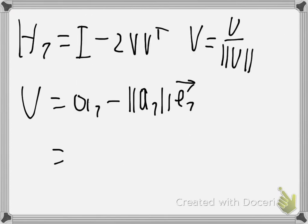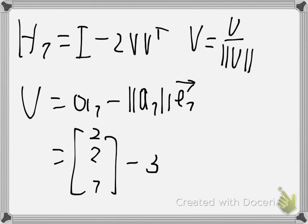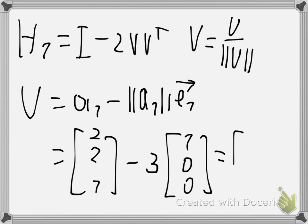So this will be the vector (2, 2, 1) minus the length of a1, which is the square root of 2 squared plus 2 squared plus 1 squared — so the square root of 9, which is 3 — times the unit vector e1. And so u will be (-1, 2, 1).